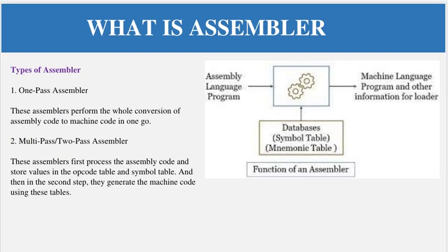Now the types of assembler — there are mainly two types: one-pass assembler and multi-pass, or two-pass, assembler. One-pass assembler means the assembler performs the whole conversion of the assembly code to machine code in one go. When talking about one-pass or two-pass, this means the conversion of source code to machine language is done in one pass or multiple passes respectively.